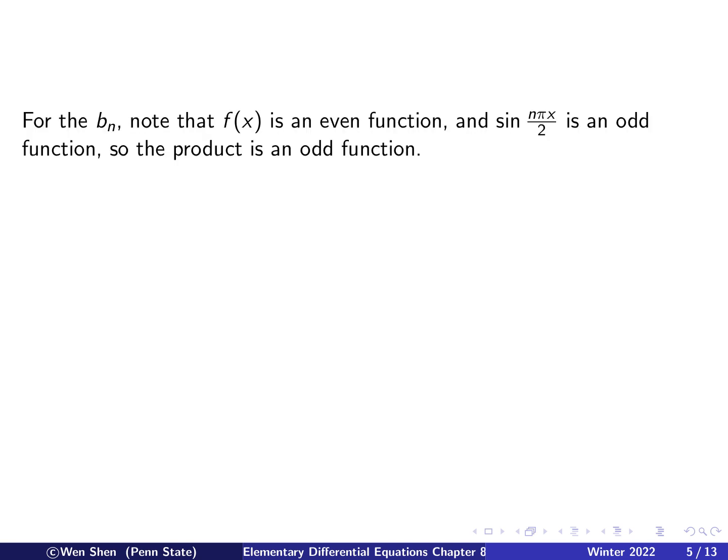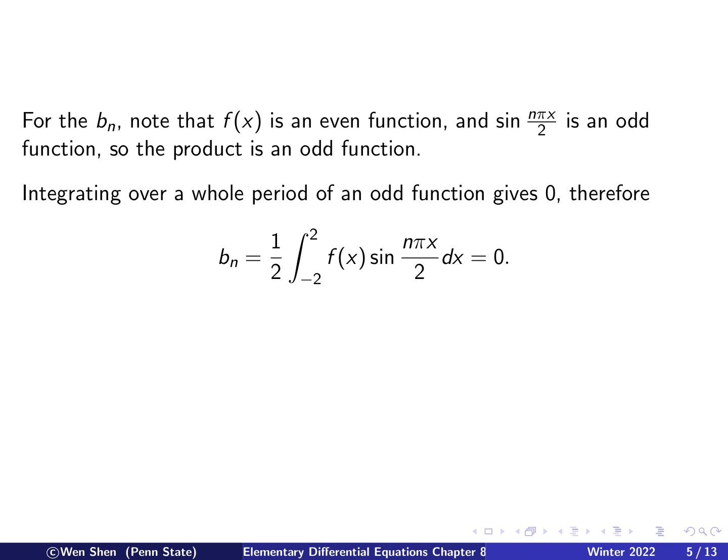Now let's compute the bₙ's. And we can actually completely skip the computation by the following observation. We note that the function f is an even function, and the function sine nπx over 2 is an odd function. Then the product is an odd function. And then integrating over a whole period symmetric about the origin of an odd function would give 0. Therefore, we have bₙ's with this integral. And as long as f is an even function, this is going to give us 0. So when bₙ's are 0, that means in the Fourier series, we have no sine functions. The only functions there will be the cosine functions and the constant.